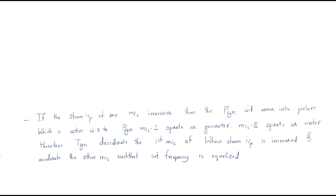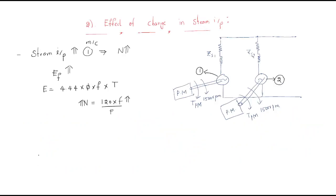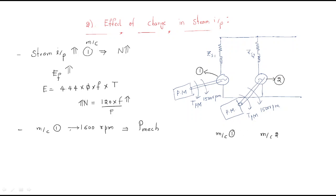Assume machine one is now running at 1600 rpm, up from the initial 1500 rpm, due to more mechanical input being given. Because of this unbalance, synchronizing power is produced and supplied from machine one to machine two.